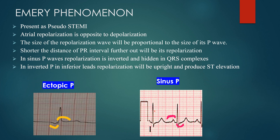In the case of sinus P waves, the repolarization is inverted and hidden within the QRS. But in the case of ectopic P waves — as in our case — the P waves are inverted in the inferior leads, so the repolarization of this P wave will be upright. If the PR interval is also short, the repolarization wave moves out further, becoming embedded within and slightly beyond the QRS. This is why we were seeing these ST elevations — it is the atrial repolarization mimicking a STEMI. We always need to consider this concept and understand these principles before interpreting the ECG.